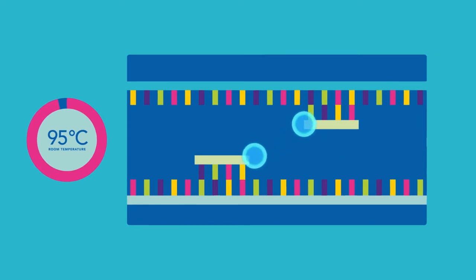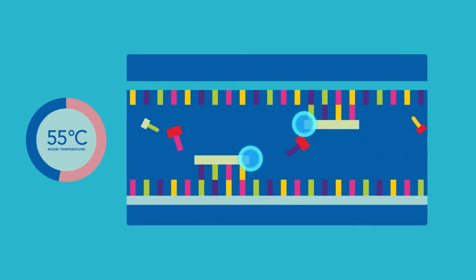During the annealing step, the temperature cools between 45 to 65 degrees Celsius, and the single-stranded primers attach to the appropriate ends of the target sequence.